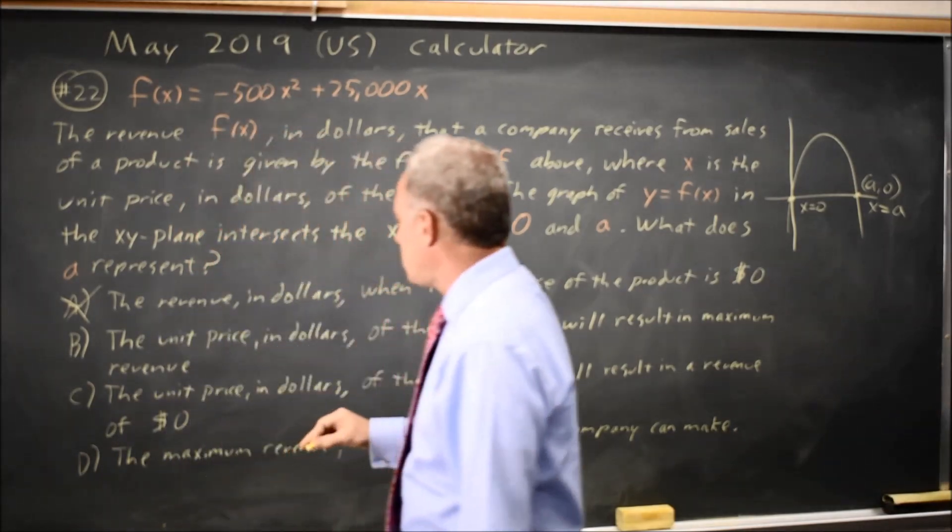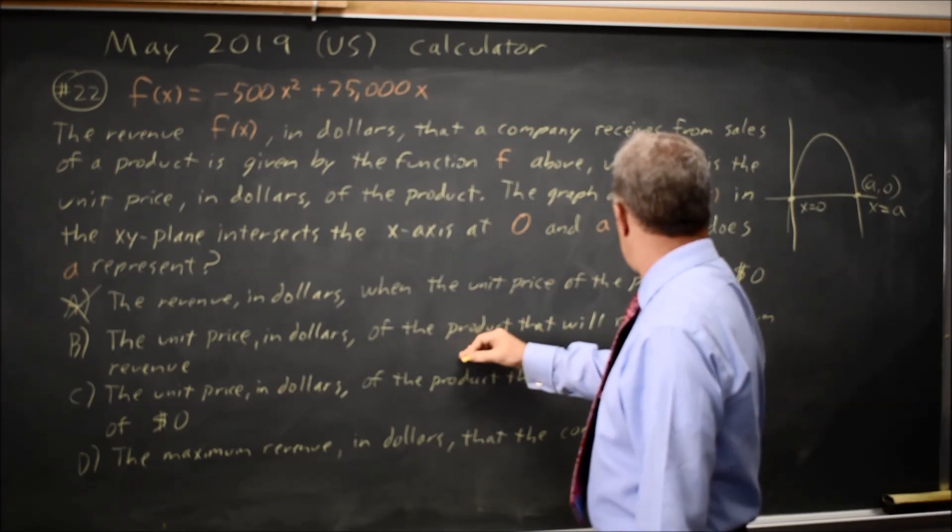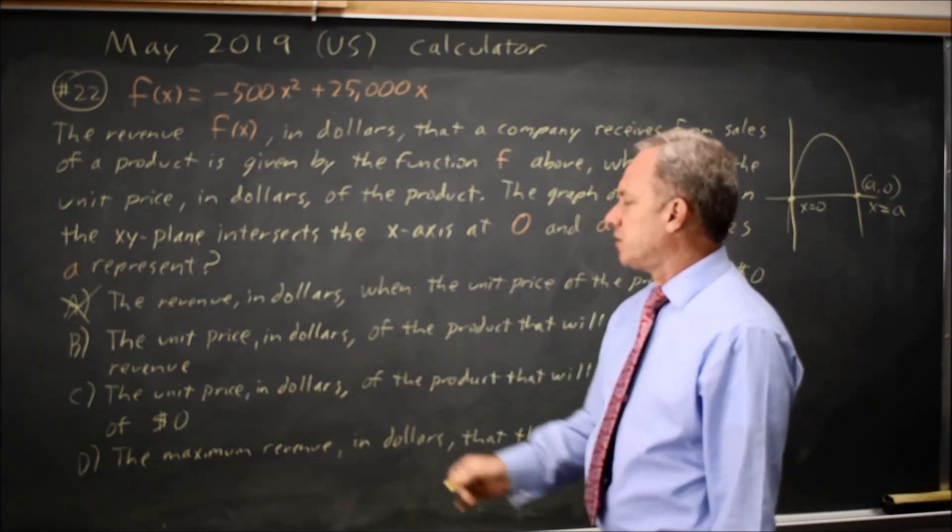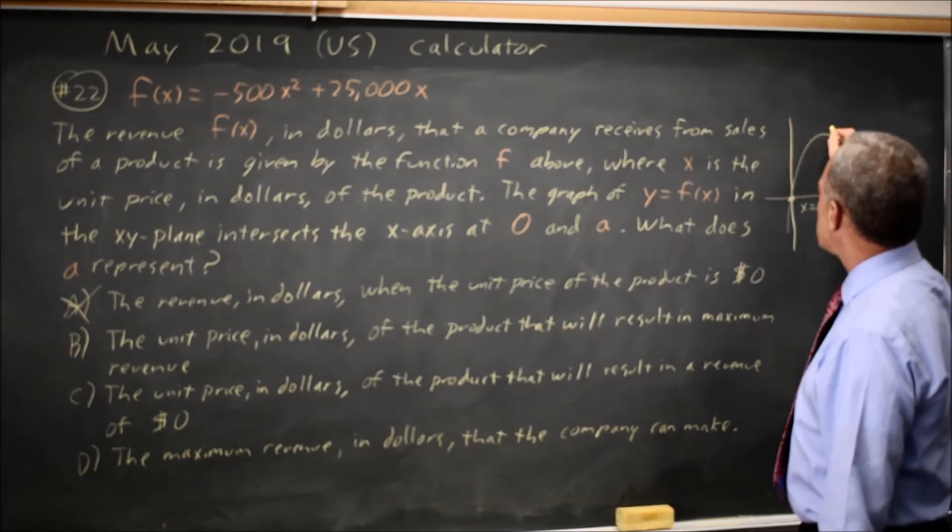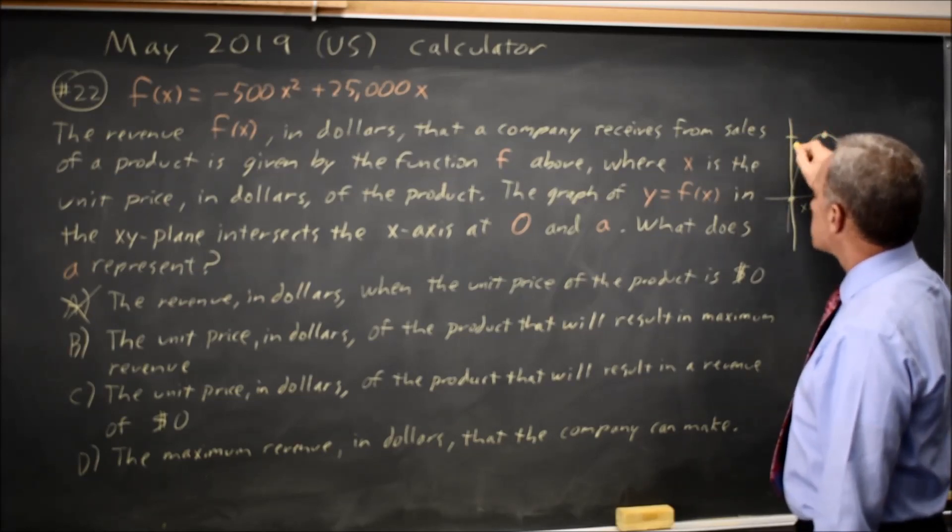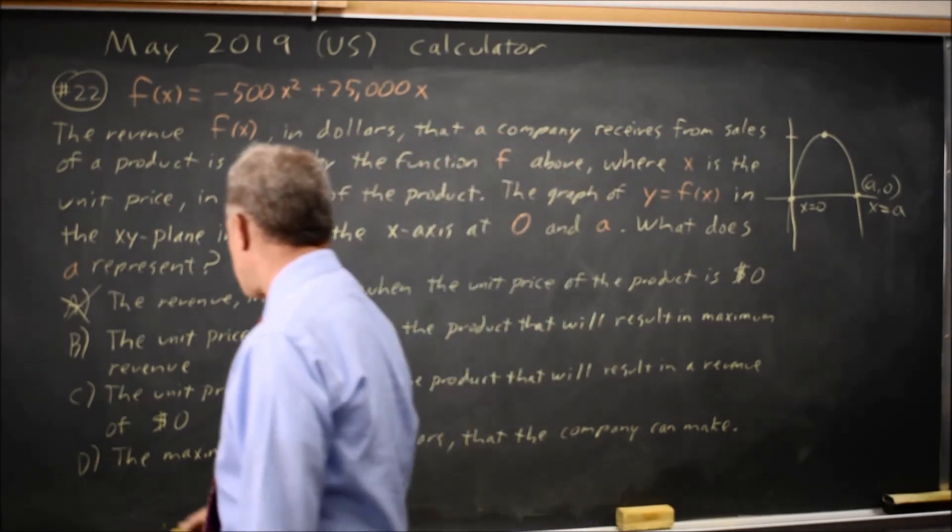Choice B is unit price. X is unit price, but they're saying unit price that results in maximum revenue. Since f of x is y is revenue, the maximum occurs up here, not on the x axis, so choice B is wrong.